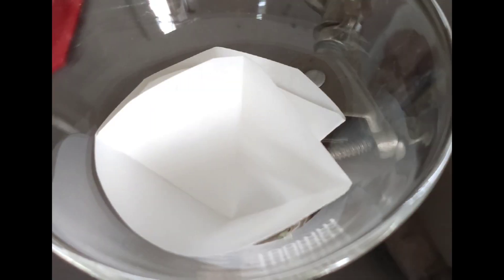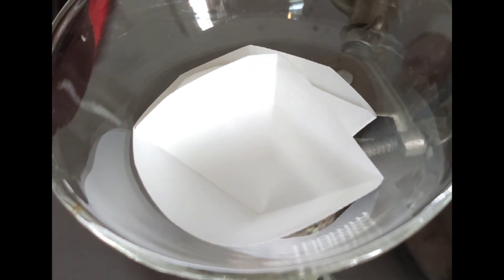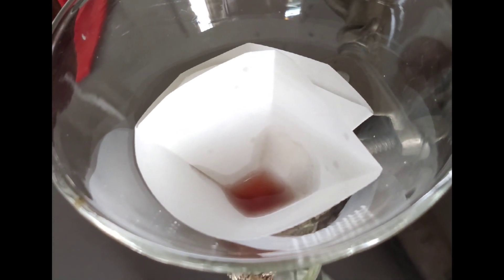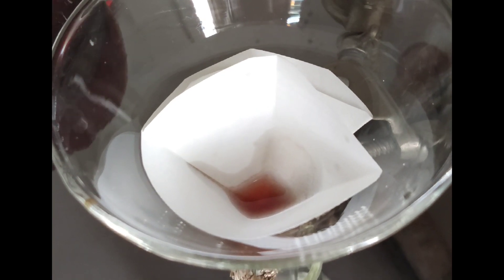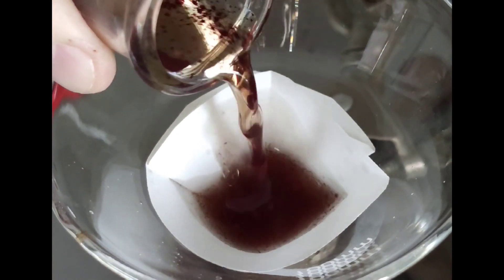After letting the suspension of the cobalt corrole in brine stand for a few minutes, we filter it using a simple filter paper. We add the suspension by pipette slowly. When the filter paper is wet, we can start pouring faster the rest of the flask contents.